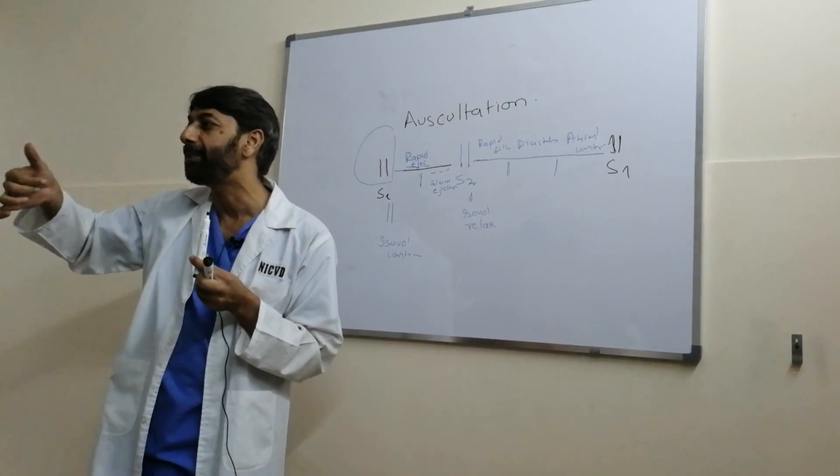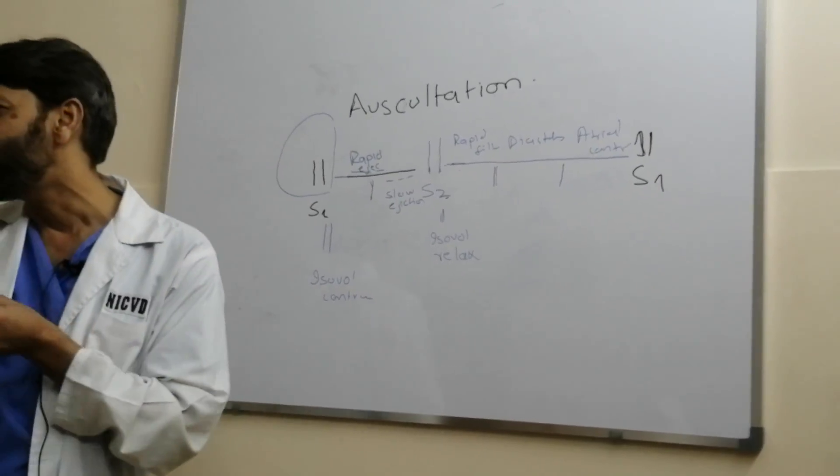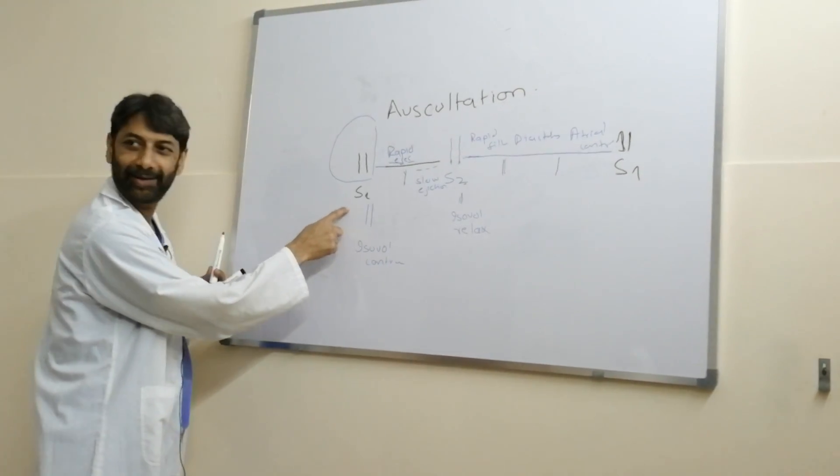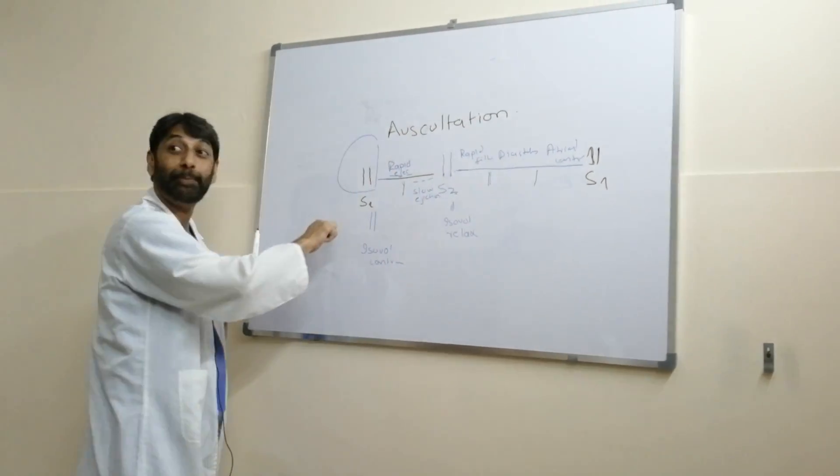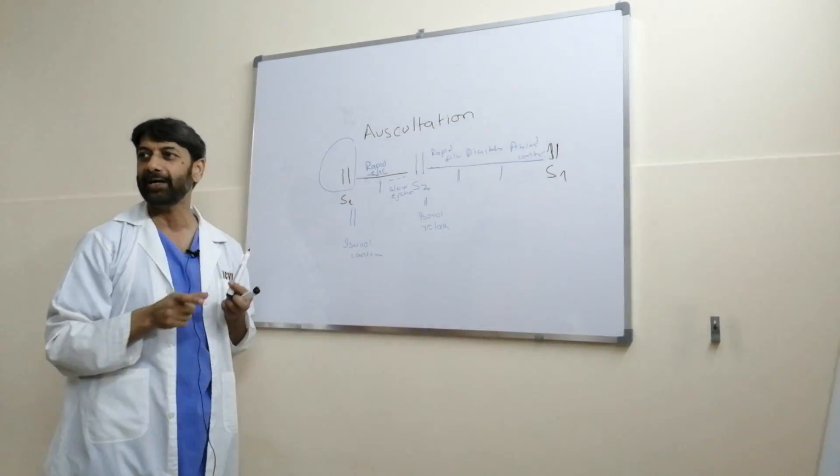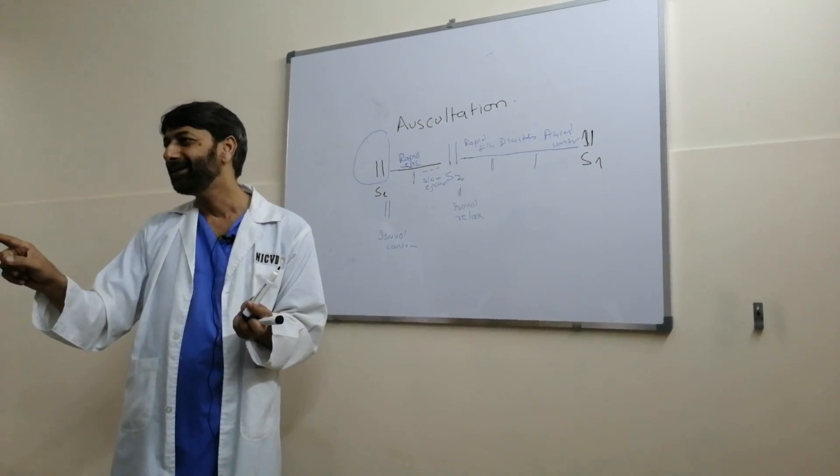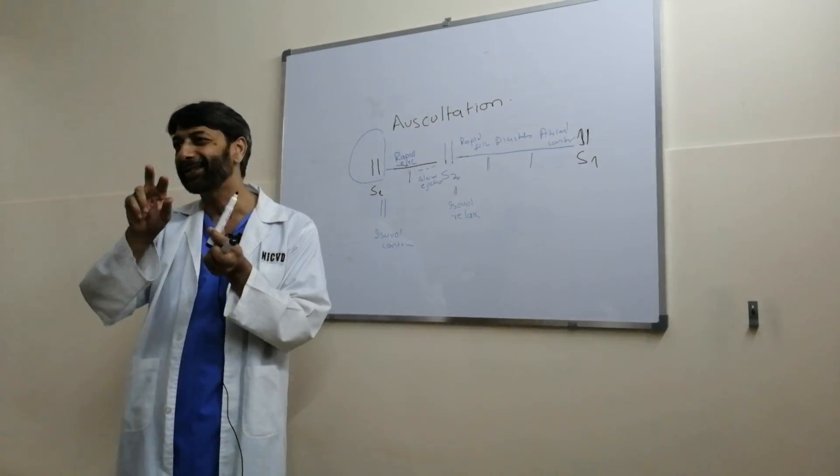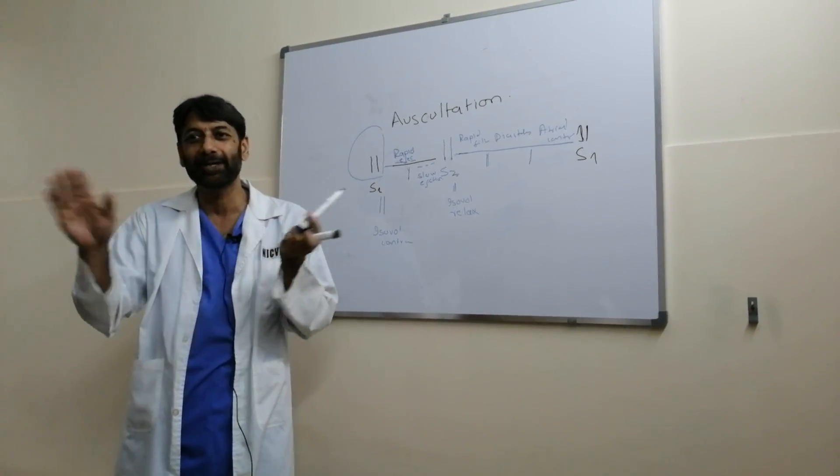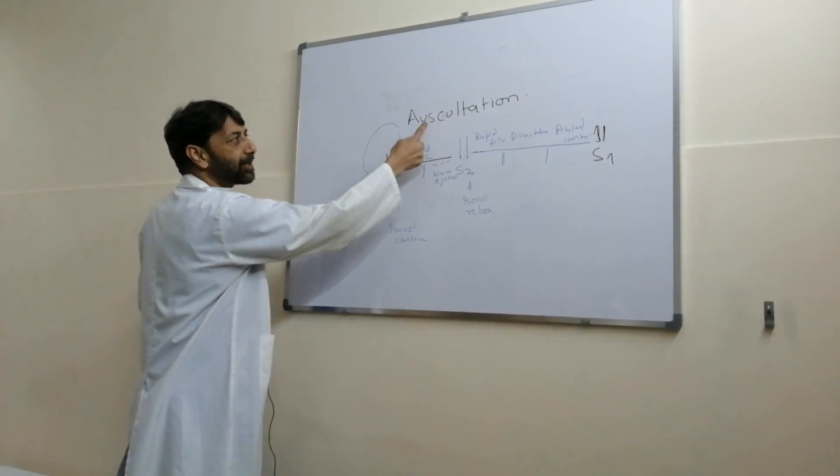You're going to palpate the pulse at the end of rapid ejection phase, which is after this isovolumic contraction. Your first heart sound is coming at this stage before the pulse. So the sound which is coming before the pulse is first heart sound. It's almost impossible to assess a pulse and then coincide it with the heart sound. You can't do that. It's practically impossible. Theoretically it's right.